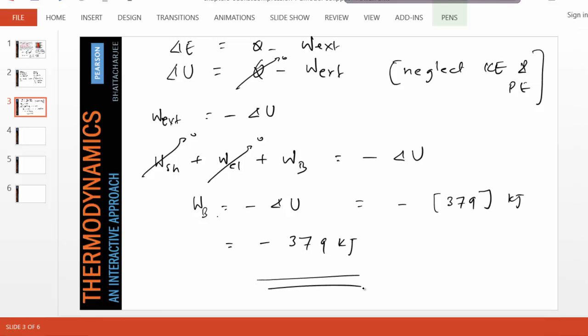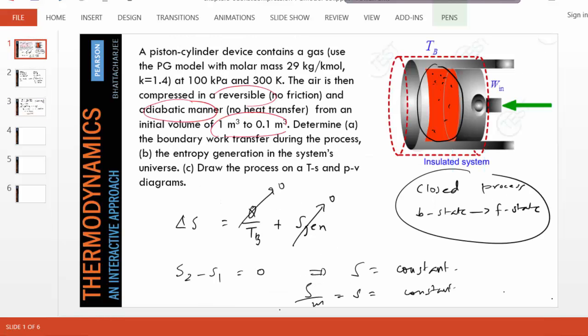In the light of PG model, our interest was how to find a property difference delta U. But now in this problem, we show if you know how to find property differences, how that is useful in calculating a practical problem. So as you can see, WB negative 379 means work is going into the system. And therefore, as you can understand, the work going in is negative when the sign convention tells you that.